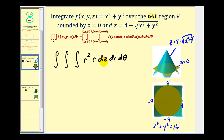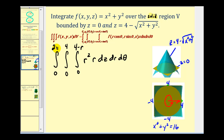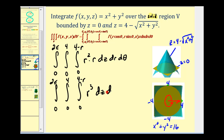For the limits of integration for z, it starts at zero and goes up to the surface. The lower limit is zero and the upper limit is 4 − √(r²) = 4 − r. For r, looking at the xy-trace, r goes from zero out to four. For θ, since we want the entire cone, θ goes from zero to 2π. So our integral is ∫₀²π ∫₀⁴ ∫₀^(4−r) r³ dz dr dθ.